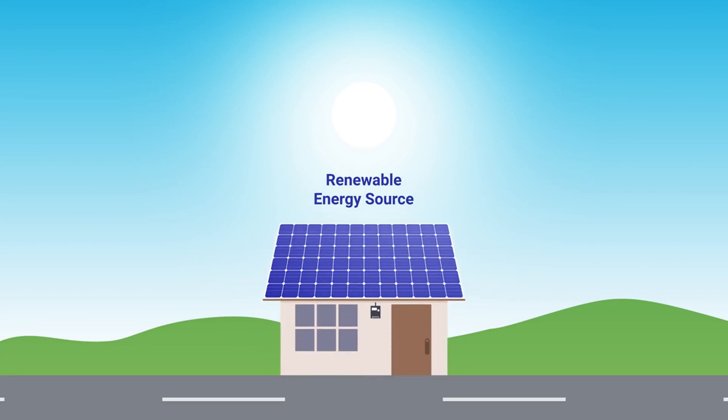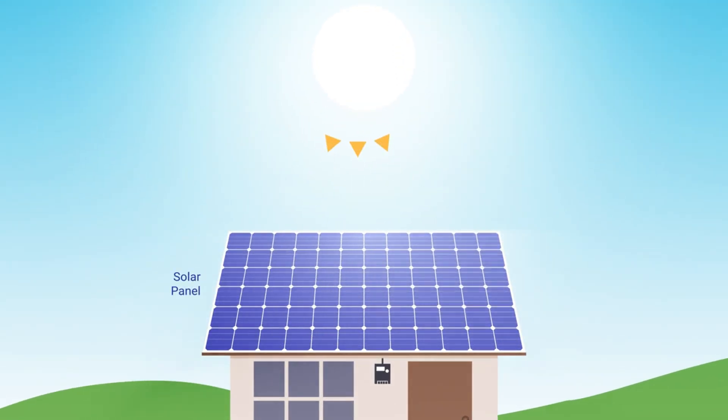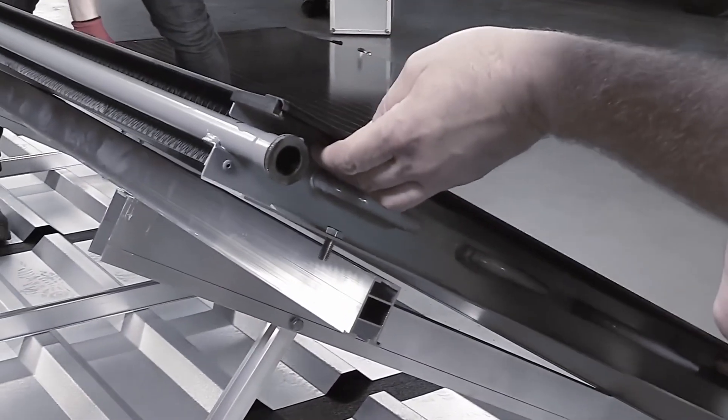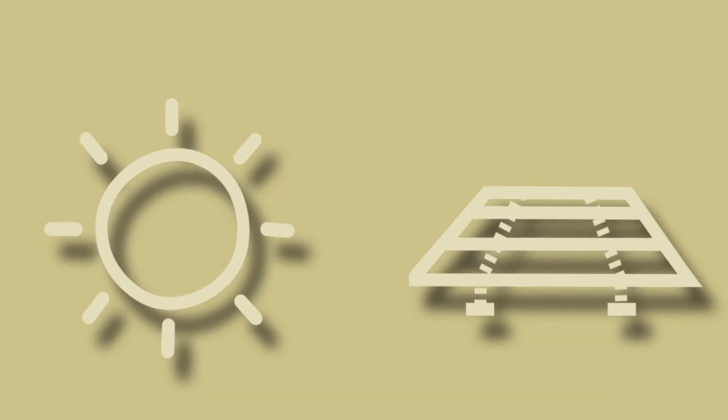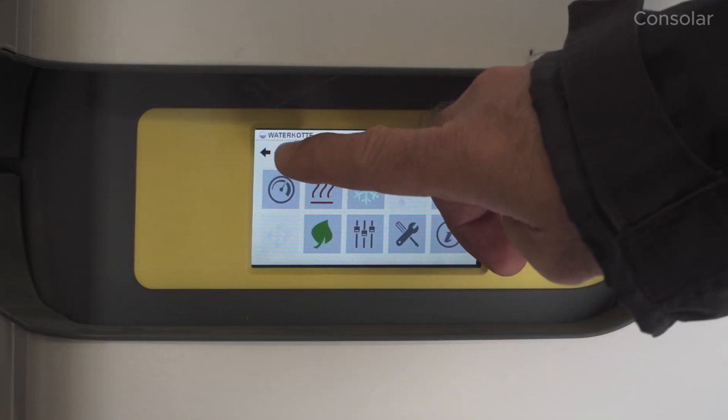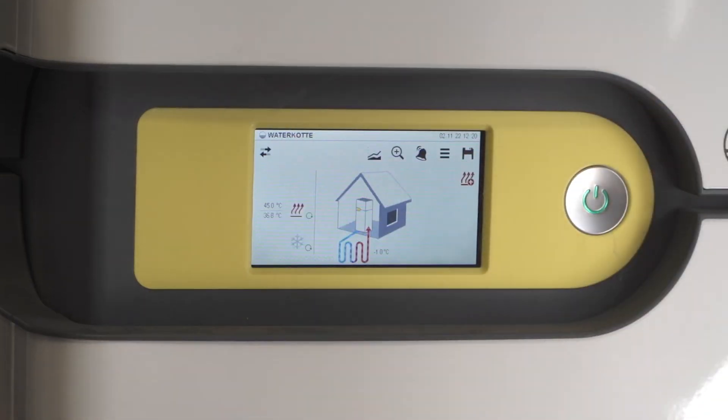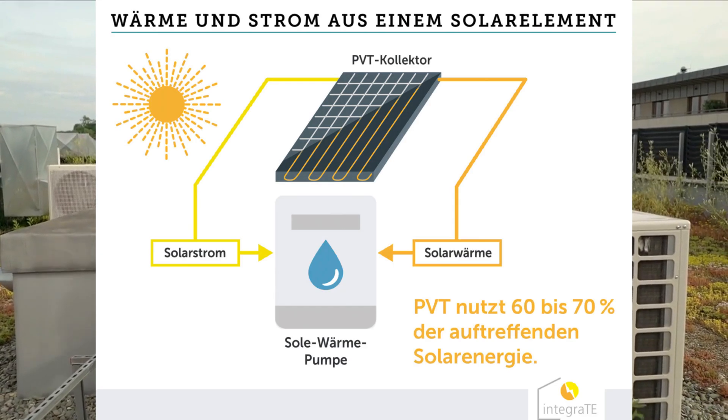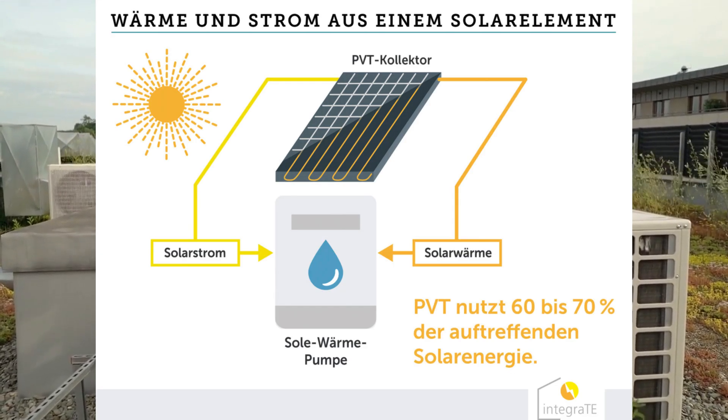While the photovoltaic layer converts sunlight into electricity, the system also captures the heat that's usually wasted. This thermal energy, along with low temperature heat from the surrounding air, is delivered to a connected heat pump. As a result, the heat pump operates more efficiently because it's working with a warmer input source than cold outdoor air.